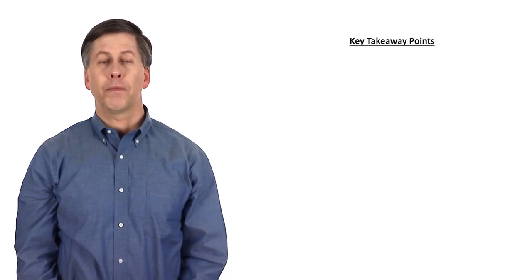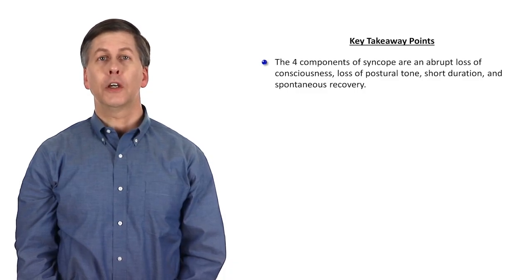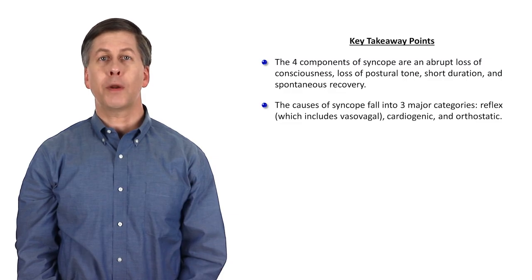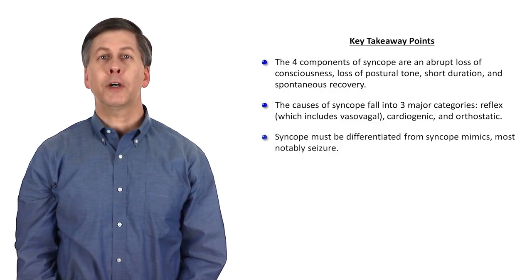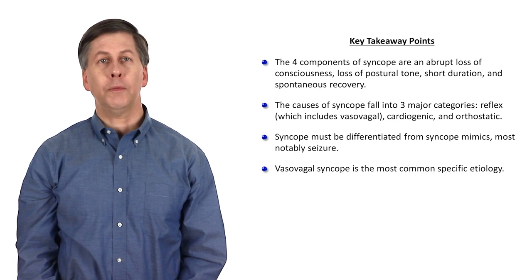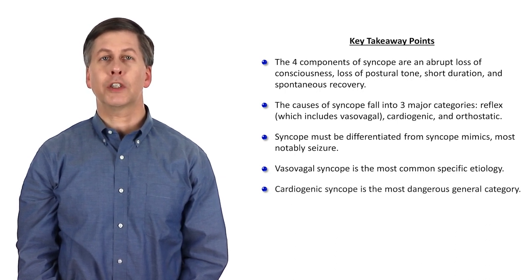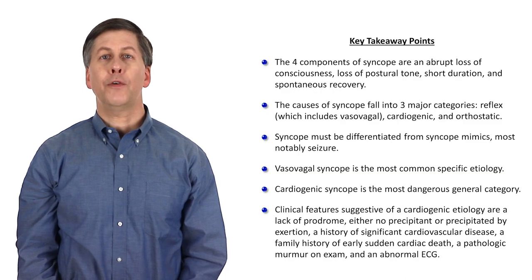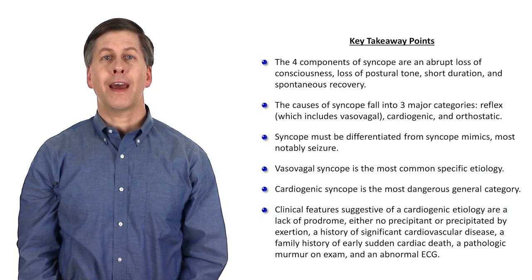That's the practical diagnostic approach to syncope. Here are the major takeaway points for this topic. The four components of syncope are an abrupt loss of consciousness, loss of postural tone, short duration, and spontaneous recovery. There are many causes of syncope, but they fall into three major categories: reflex, which includes vasovagal, cardiogenic, and orthostatic. Syncope must be differentiated from syncope mimics, most notably seizure. Vasovagal syncope is the most common specific etiology, while cardiogenic syncope is the most dangerous general category. And the clinical features suggestive of a cardiogenic etiology are a lack of prodrome, either no precipitant or precipitated by exertion, a history of significant cardiovascular disease, a family history of early sudden cardiac death, a pathologic murmur on exam, and an abnormal ECG.